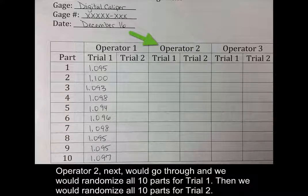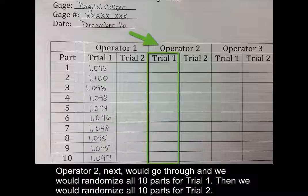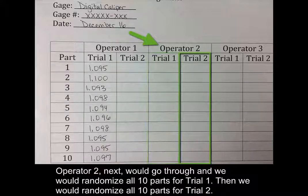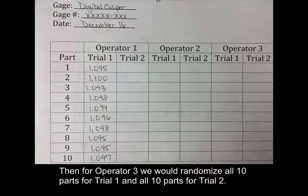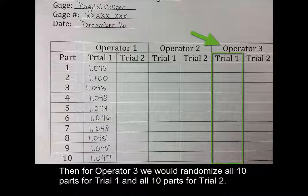Operator 2 next would go through and we would randomize all 10 parts for trial 1. Then we would randomize all 10 parts for trial 2. And then for operator 3, we would randomize all 10 parts for trial 1 and all 10 parts for trial 2.